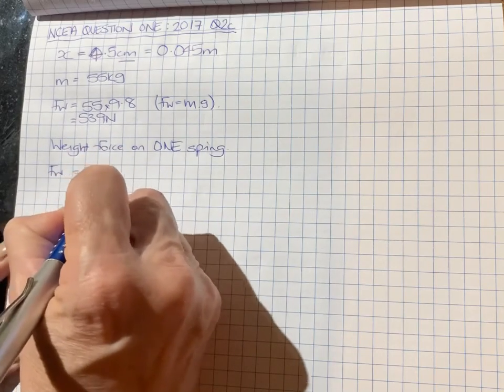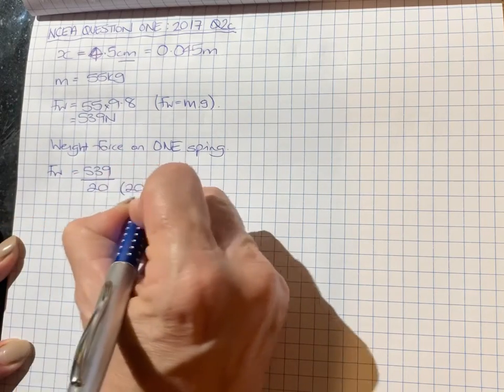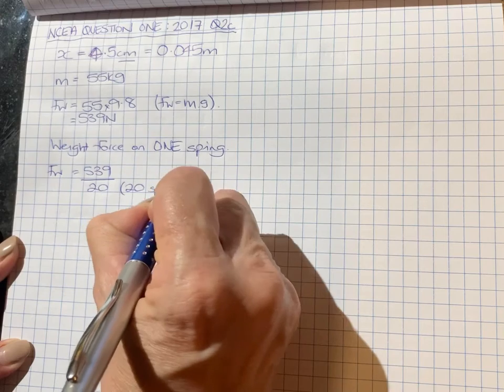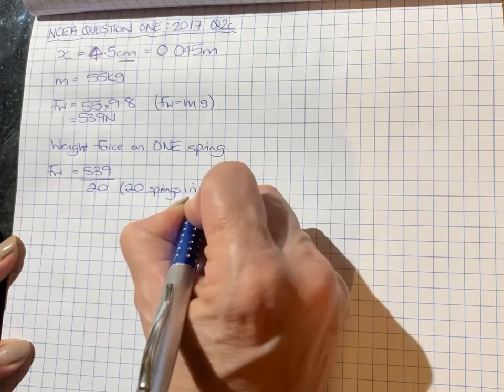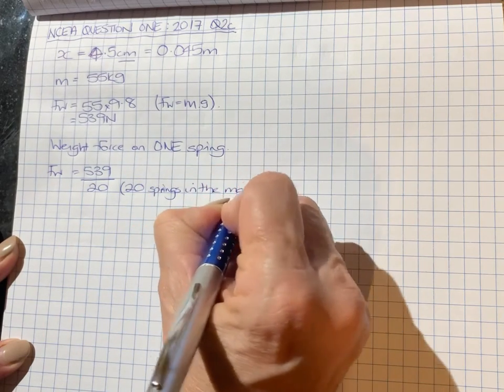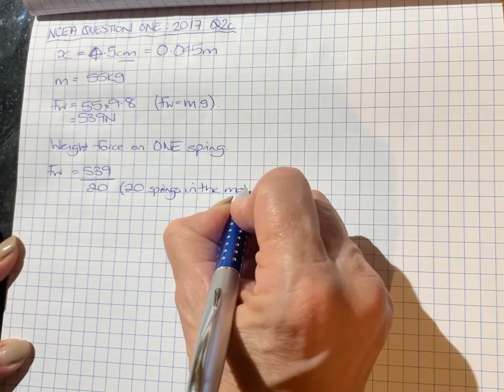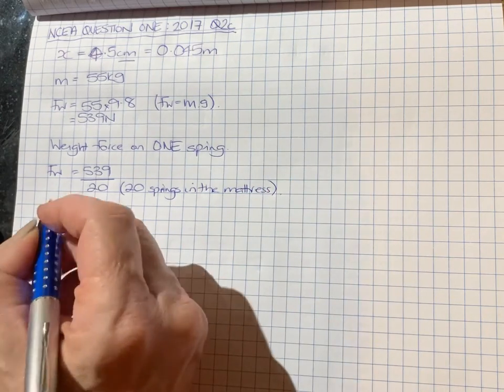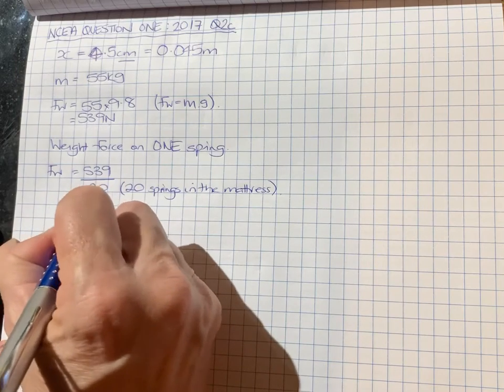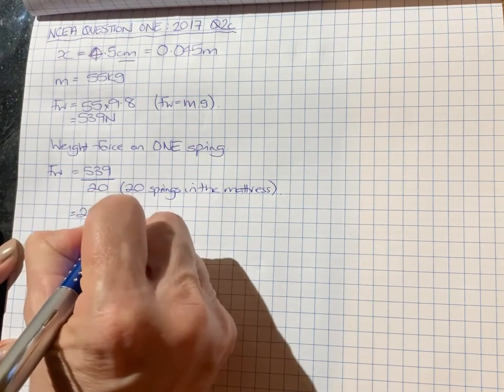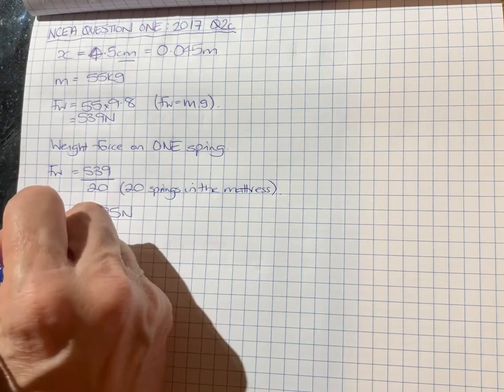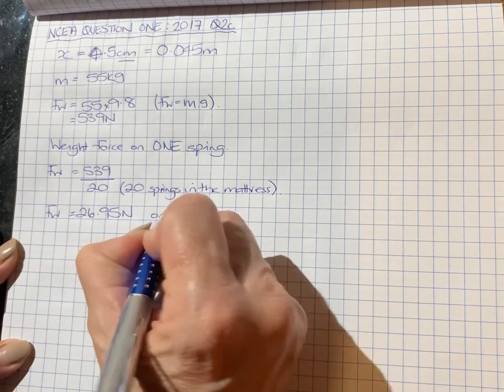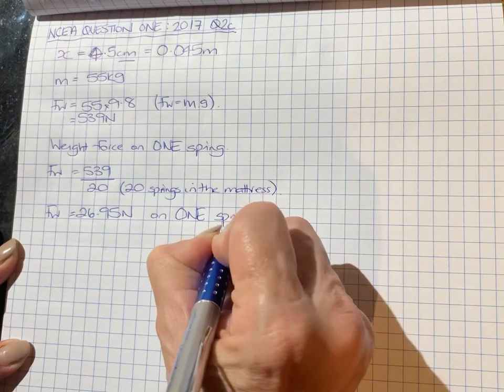So the weight force on one spring is 539 divided by 20, because there are 20 springs in the mattress. And when we do that division, we get 26.95 newtons. That's the weight force on one spring.